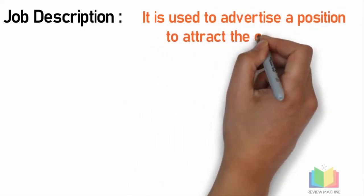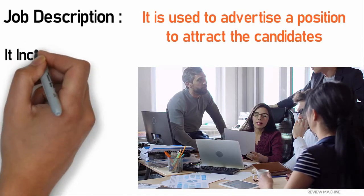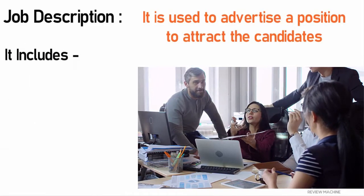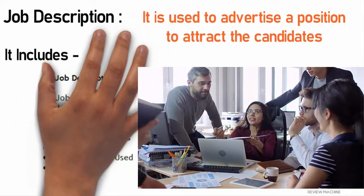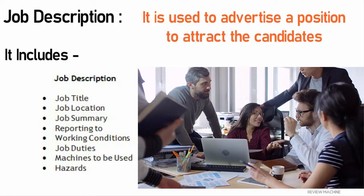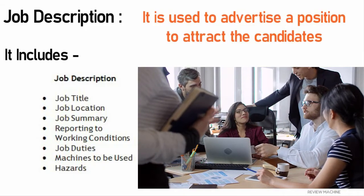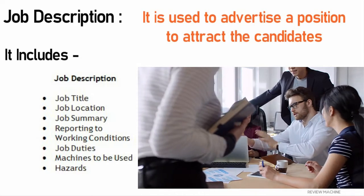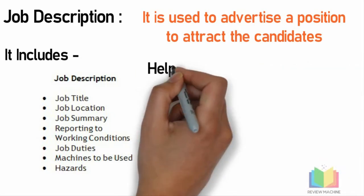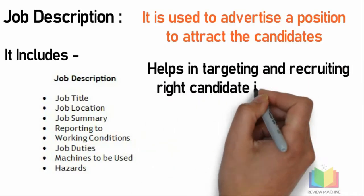Job description is used to advertise a specific job to attract candidates for interview. It includes basic job-related data useful for advertising a specific job and attracting a pool of candidates. Job description includes information such as job title, job location, reporting manager, number of employees reporting to you, job summary, nature and objective of the job, duties to be performed, working conditions, and work hazards involved. It helps in attracting, targeting and recruiting the right candidate.